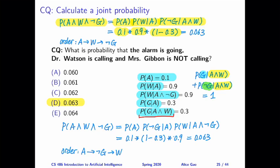Given this, we have A first, then not G given A and W given A and not G. And for these three numbers, we have two of them directly. So probability of A and probability of W given A and not G.